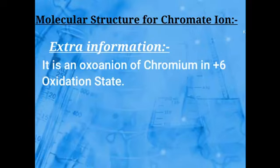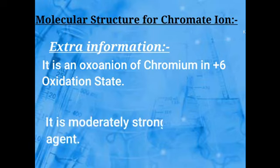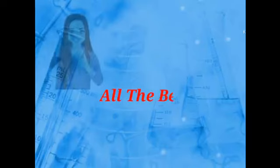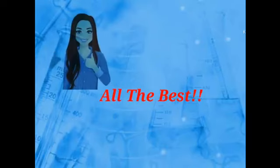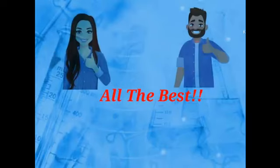The oxidation state of chromium here is +6. The chromate ion is a moderately strong oxidizing agent. That's all for potassium chromate; meet you in the next video.